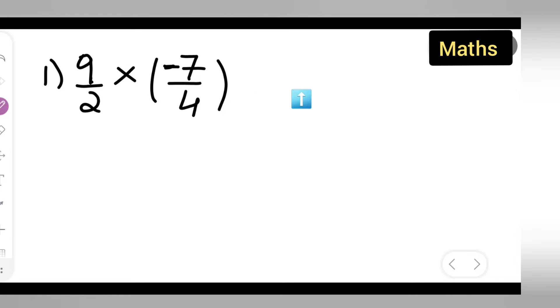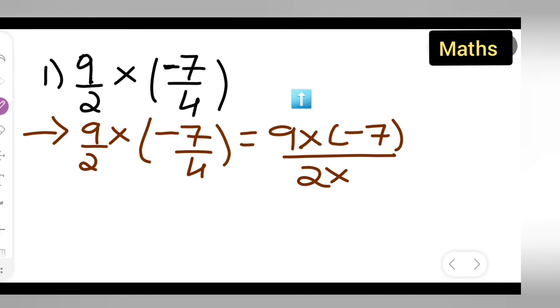So first you will have to write down 9 upon 2 multiplied by minus 7 upon 4 is equal to 9 multiplied by minus 7 upon 2 multiplied by 4.